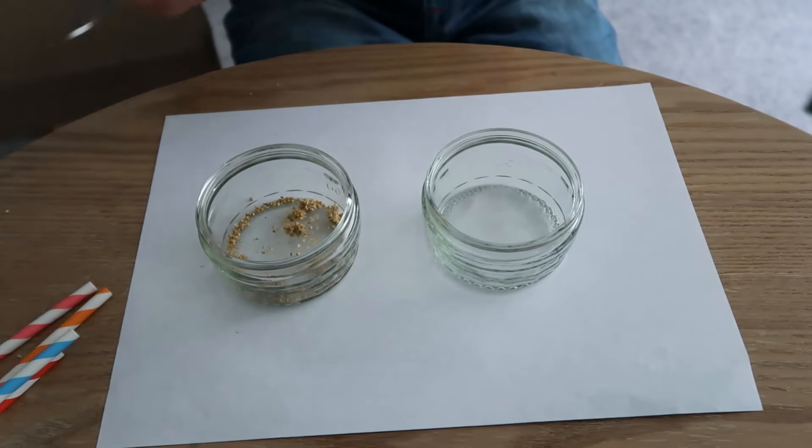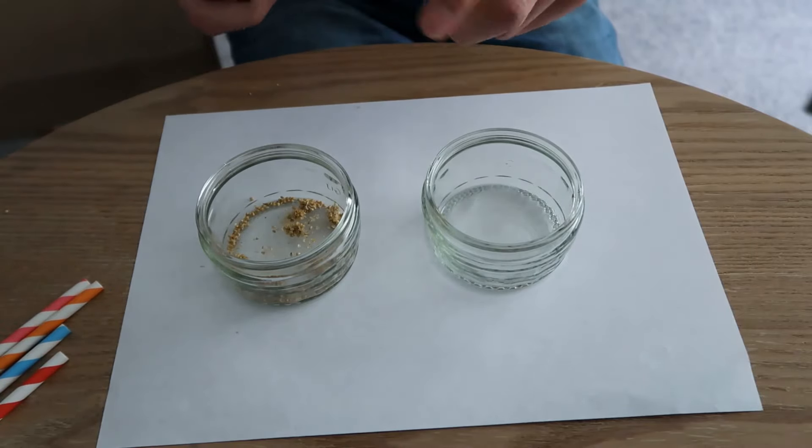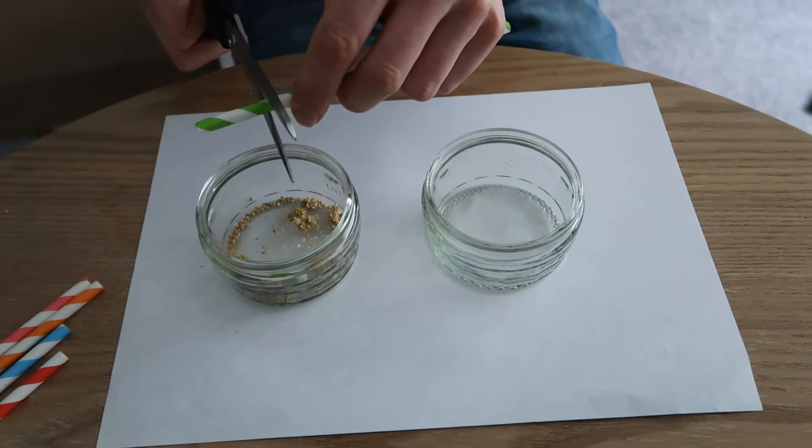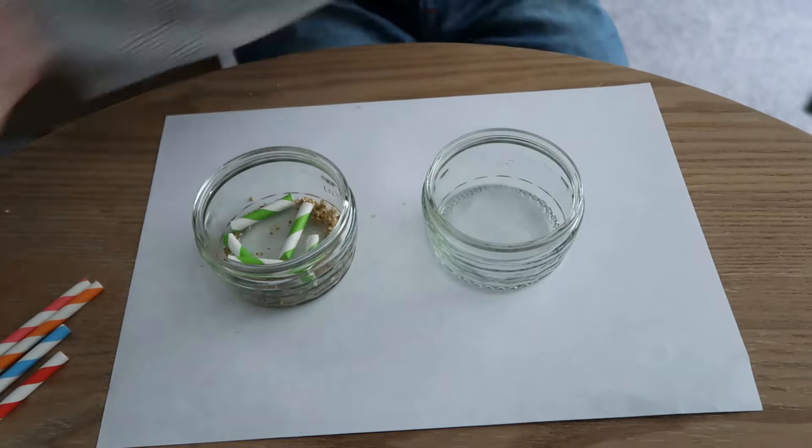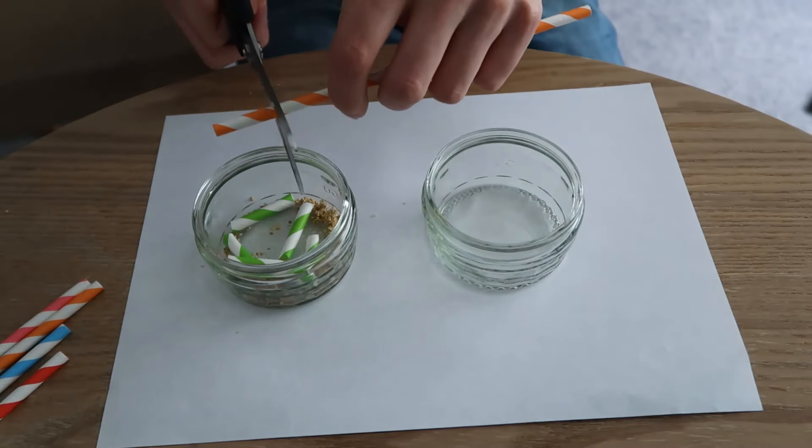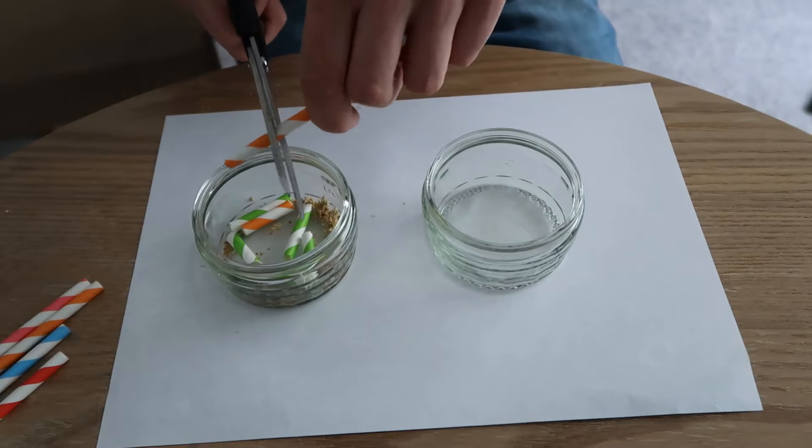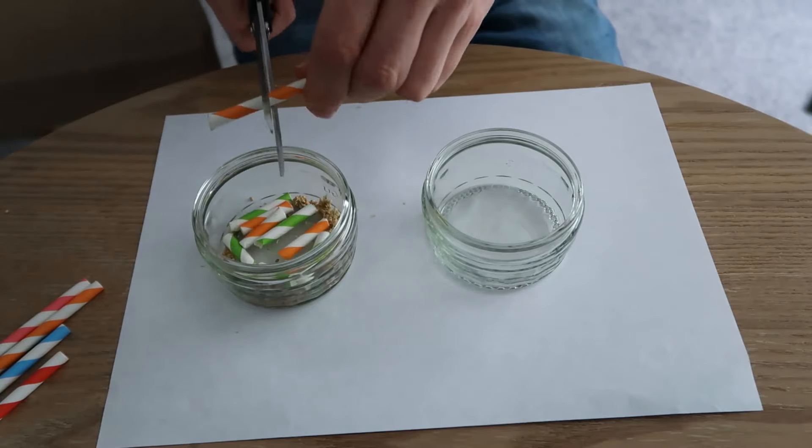And then after that, you need to pop in your paper straws. If you just cut them about one and a half inches, start with this green one. Now just by popping these in here, it's making it a little bit more difficult for the birdies to get their own treats.